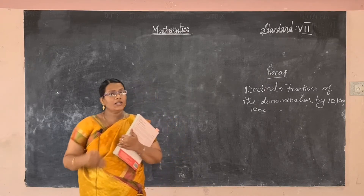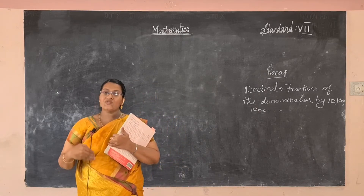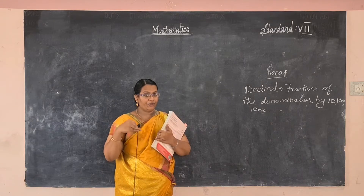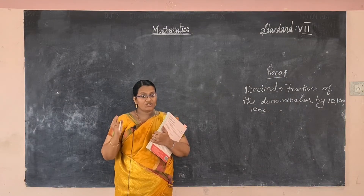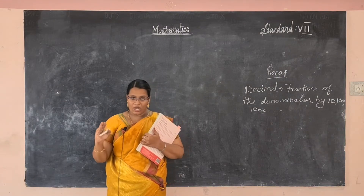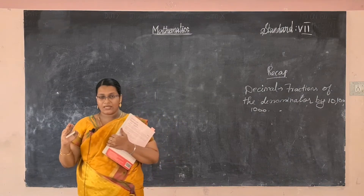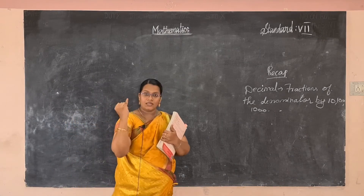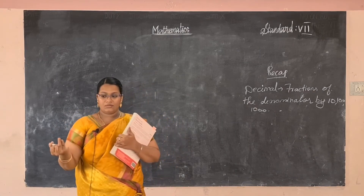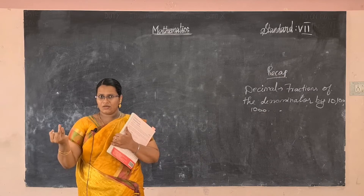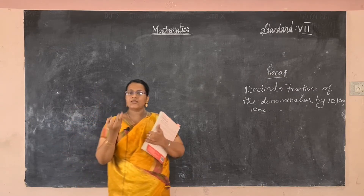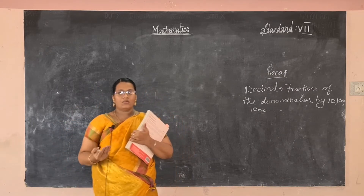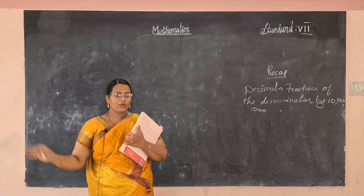We also learned the place value chart. Everyone already knows the place value chart for whole numbers. The positions are: ones, tens, hundreds, thousands, and so on — endlessly going.